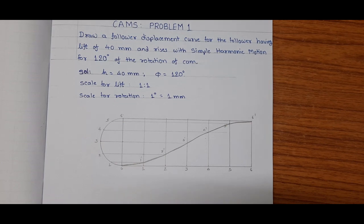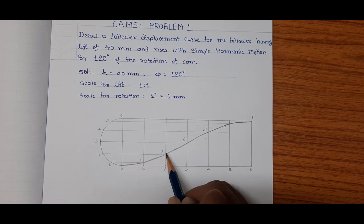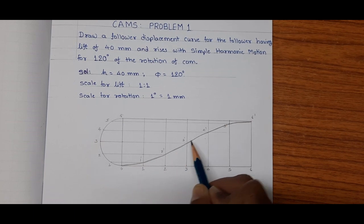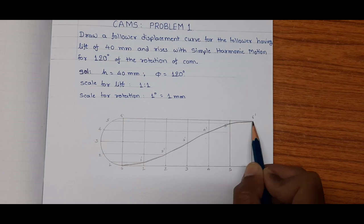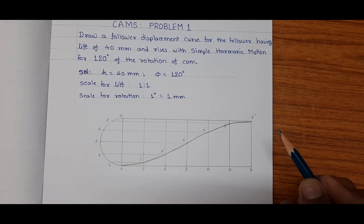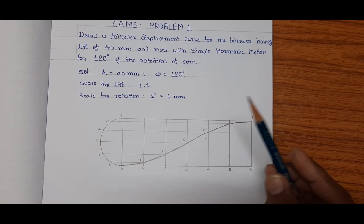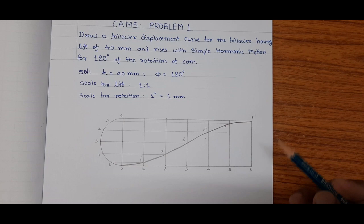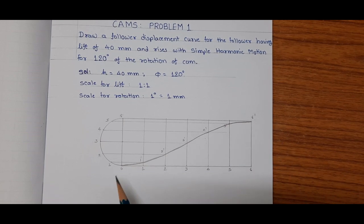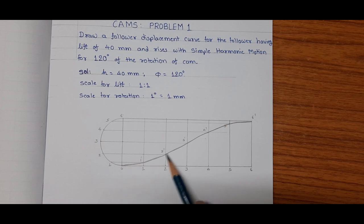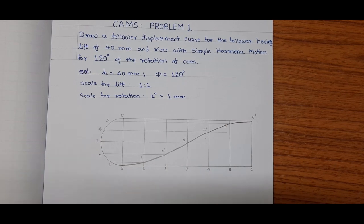So this gives us a displacement curve — 0, 1 dash, 2 dash, 3 dash, 4 dash, 5 dash, and 6 dash — for the given condition: lift of 40 mm and rotation of 120 degrees with simple harmonic motion. Thank you friends.